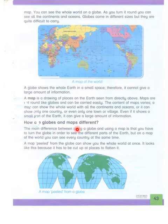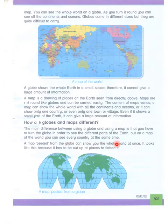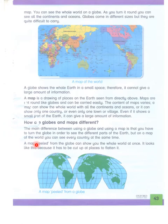How are globes and maps different? Globes اور maps مختلف کیسے ہوتے ہیں؟ The main difference between using a globe and using a map is that you have to turn the globe in order to see different parts of the earth, but on a map of the world you can see every country at the same time. Globe میں ایک country ایک side پر ہے، دوسری country دوسری side پر — کسی دوسری country کو دیکھنا ہو تو globe کو گھمانا پڑے گا، while map میں سیدھا سیدھا آپ دیکھ سکتے ہیں۔